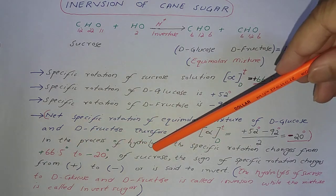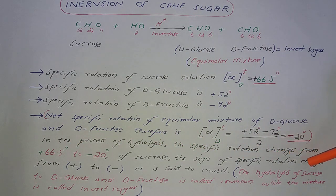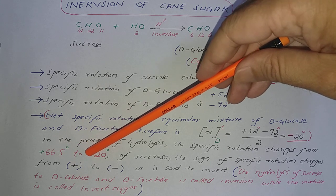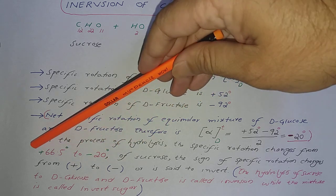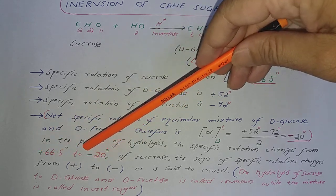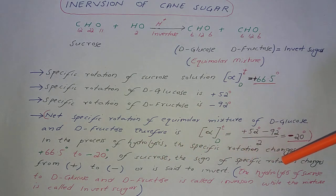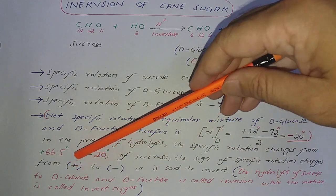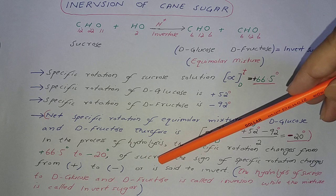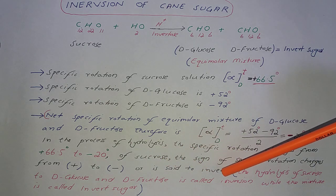In the process of hydrolysis, the specific rotation changes from plus 66.5 degrees to minus 20 degrees, plus to minus of sacrose. The sign of specific rotation changes from plus to minus or set to invert.